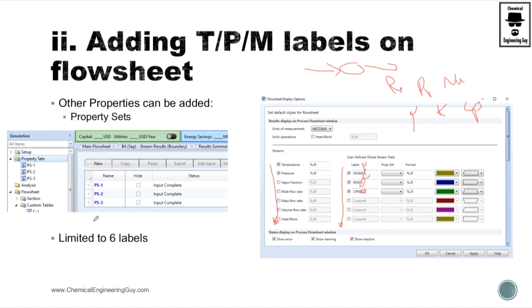So one important thing right here, guys, is that unfortunately we need to state one property set for each label right here. So if you wanted to add maybe six labels from this property set, you cannot simply state that.